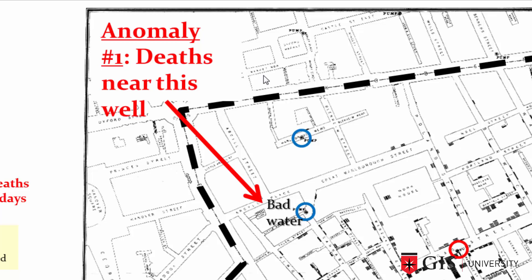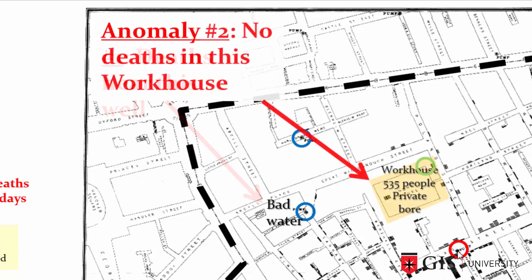The first anomaly: people died of cholera near a different well. Why was that? When he interviewed local residents, he discovered that they didn't like the water from that well — it had a really bad taste. So people from that area were actually traveling all the way to Broad Street to get water from the Broad Street pump, because it was known locally as having very pleasant tasting water.